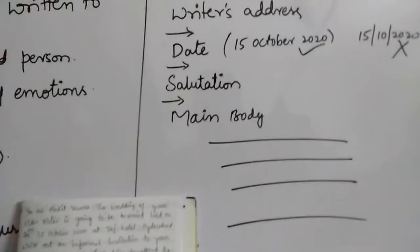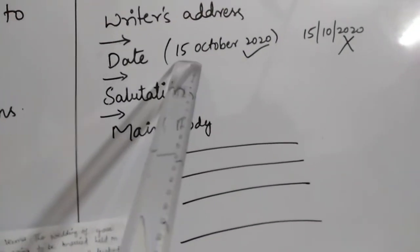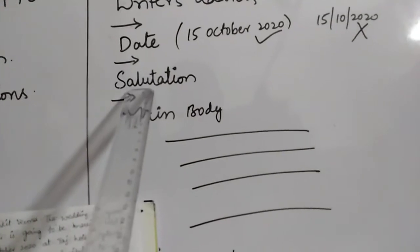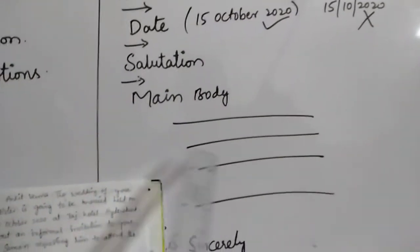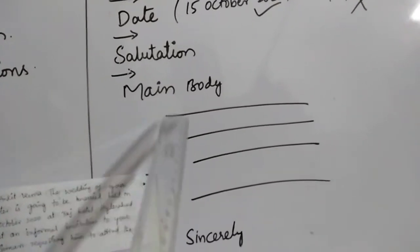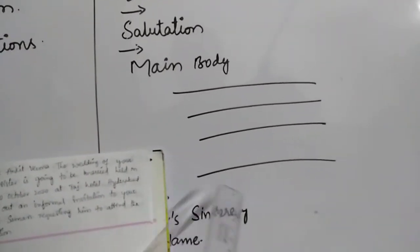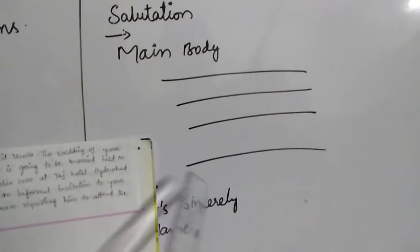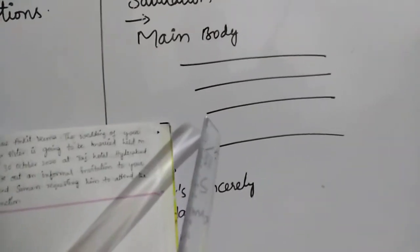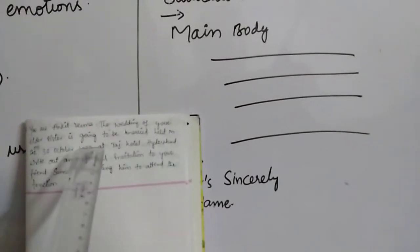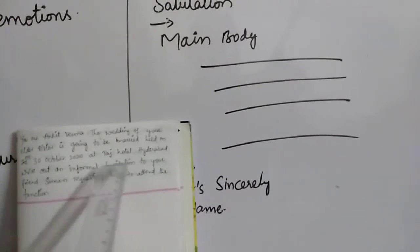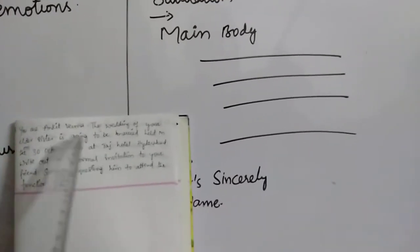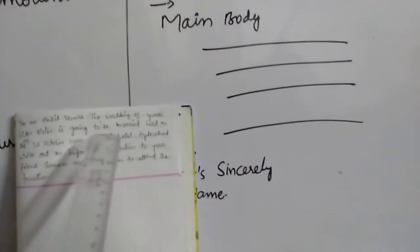According to this question, write the writer's address, then the date on which you are writing the letter. The salutation here is 'Dear Suman.' Then write the main body — your elder sister is going to get married and you are requesting Suman to attend the marriage function. Note: the time is not given in the question, so write it on your own. Then write 'Yours sincerely' and your name.